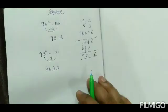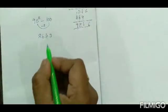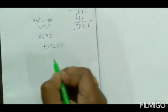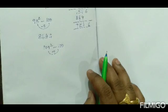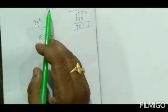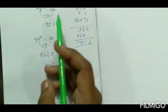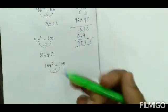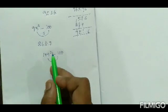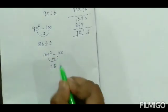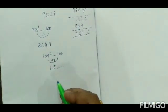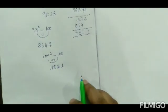What if a number is more than 100? Let us take 109 squared. The difference between 109 and 100 is 9, and 9 is more than 100. When the number is less than 100 we subtract; when more than 100 we add. So step number 1: add 9 to 109, giving 118. We write 2 places, and since the difference is 9, we compute 9 squared = 81. So 109 squared equals 11881.